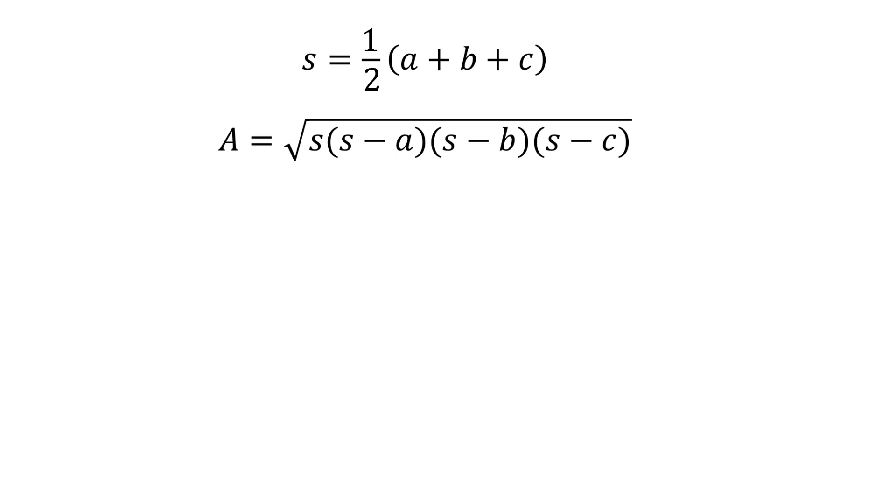The next formula is a equals square root of s times s minus a times s minus b times s minus c where s equals 1 half times a plus b plus c. This is Heron's formula used to find the area of a triangle with the sides a, b and c.